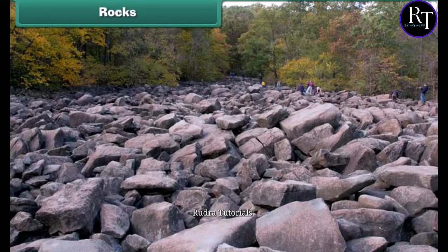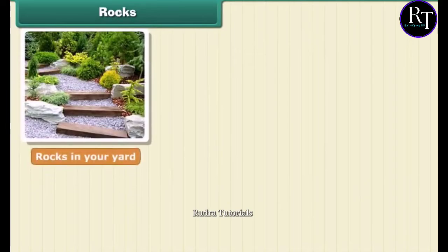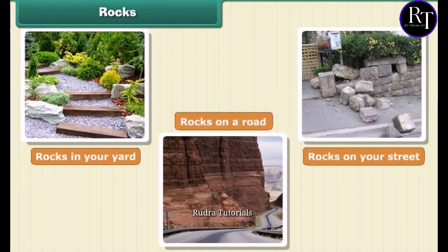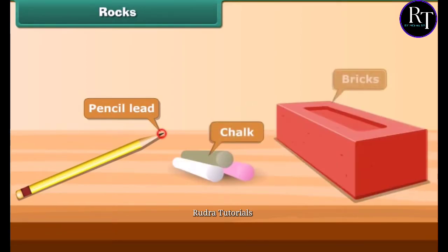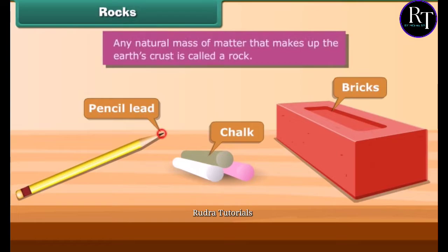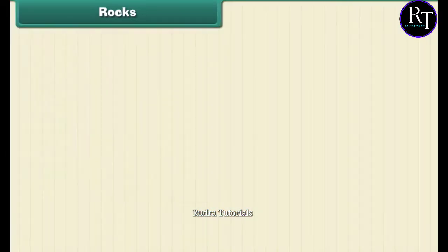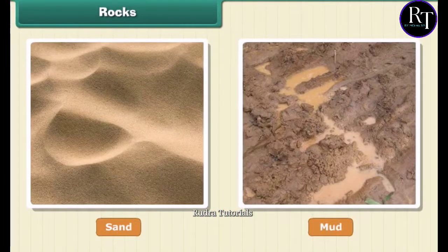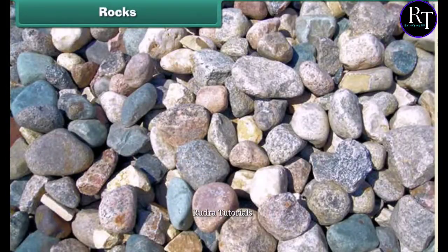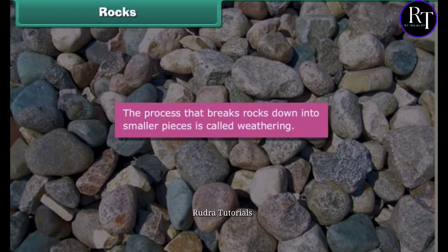Rocks are all around us. You can see rocks in your yard, on your street, on a road — everywhere you look. Pencil lead, chalk, and bricks are all rocks. Any natural mass of matter that makes up the earth's crust is called a rock. Do you know sand and mud are also rocks? Rocks can be of different size and color. The process that breaks rocks down into smaller pieces is called weathering.